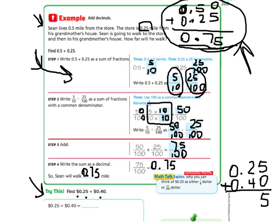Five plus zero is five. Two plus four is six. Decimal stays in the same spot. Zero plus zero is zero. So sixty five cents, I make sure that I put my dollar sign in front of my answer.